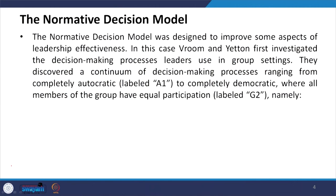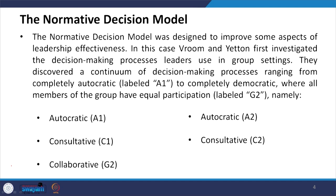They investigated what decision making processes leaders are implementing in group settings. They discovered a continuum ranging from completely autocratic, level A1, to completely democratic where all members have equal participation, level G2. In autocratic A1 and A2, there is zero or very limited participation by team members.